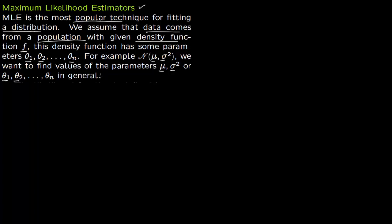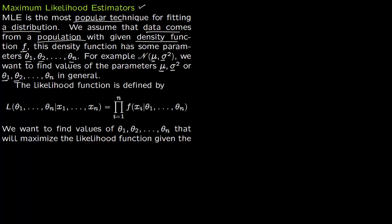To recap: you have a sample and you presume it is coming from a distribution with certain parameters, and you want to find those parameters. The first step is you form a likelihood function. This likelihood function finds estimates of theta_1 to theta_n given your observations. You fit your observations into the density function and form a product. Since your sample size is say N, you find the product of N things. We want to find the values of theta_1 to theta_n that will maximize this likelihood function.